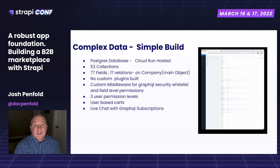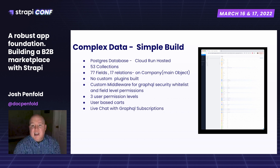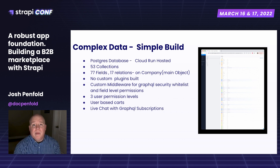We have user-based carts, so the API token on the front end keeps track of each individual customer's cart. Each company in our system can have multiple users, and each user can have their own saved cart that persists after they log off. We also built live chat with integration between buyers and sellers in real time using GraphQL subscriptions — that's the one part we did not use Strapi for, as GraphQL subscriptions were a bit more challenging to build into Strapi, so we built that on an open-source package backend.